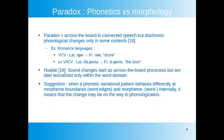A paradox emerges from this double definition. Intervocalic voicing supposedly happens across the board in connected speech, where phonetics is blind to morphological boundaries such as word edges, but these same variational phenomena are the breeding ground for diachronic phonological changes where only some contexts actually phonologize. In Romance languages, for instance, word-internal intervocalic stops have undergone lenition — e.g., Latin ripa → French rive 'shore' — while word-initial consonants preceded by a vowel have resisted lenition, as in Latin illa porta → French la porte 'the door'.